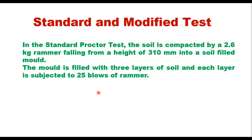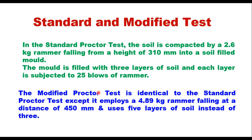In the standard proctor test, the soil is compacted by a 2.6 kg rammer falling from a height of 310 mm into a soil-filled mold. The mold is filled with three layers of soil and each layer is subjected to 25 blows of the rammer. The modified proctor test is identical except that it employs a 4.89 kg rammer falling 450 mm and uses five layers of soil instead of three, so the compacting effort is much more.